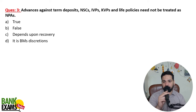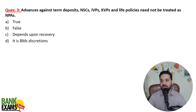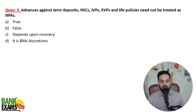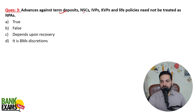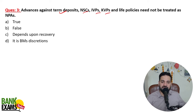Advances against term deposits, NSC (National Savings Certificates), IVP, Kisan Vikas Patra, and life policies need not be treated as NPAs. Advances against these securities are not to be treated as NPAs, because the banks can sell off these assets and recover their dues. This cannot be treated as NPAs.